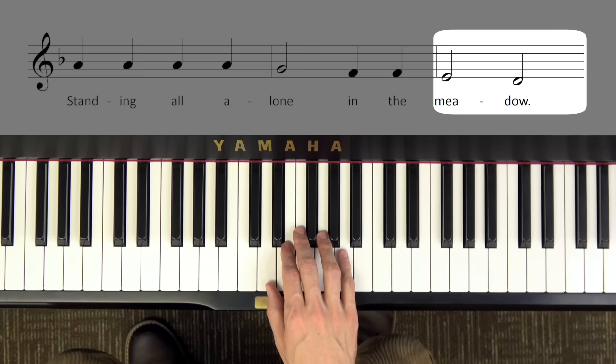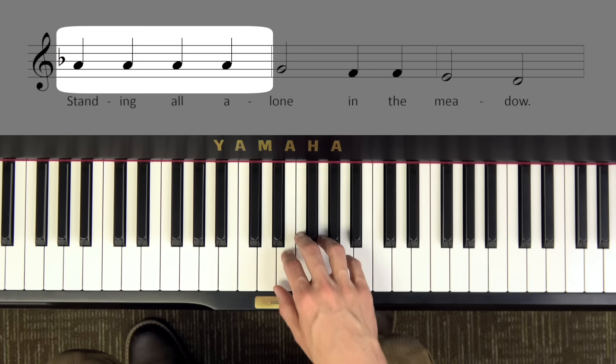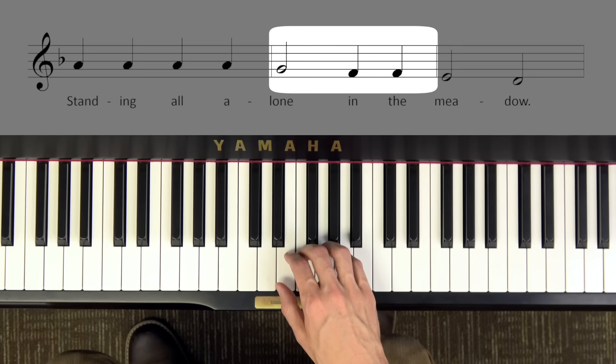Now this time let's try singing the letter names. We start on an A, then it steps down to G to F to E to D. Can you play and sing the letter names with me? Go. A A A A G F F E D. Great.